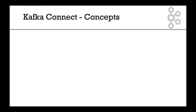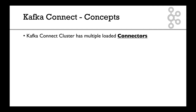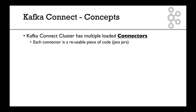Now, pay attention — we're going to talk about concepts for Kafka Connect. A Kafka Connect cluster has multiple loaded connectors. Each connector is a reusable piece of code; it's basically a Java jar. So when you compile your code and package it in Java, you create jar files. A connector is one of these classes in Java, and you've packaged it and created a jar.